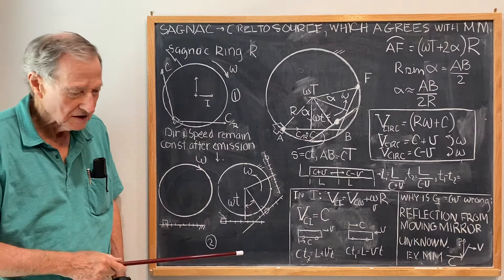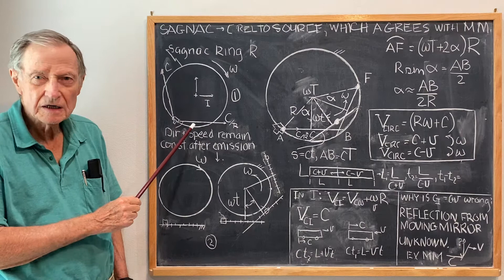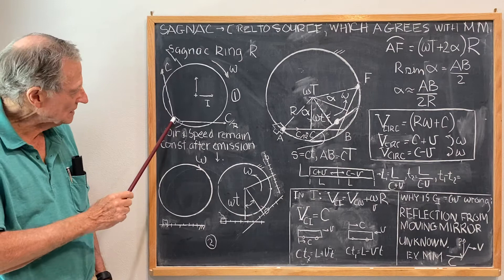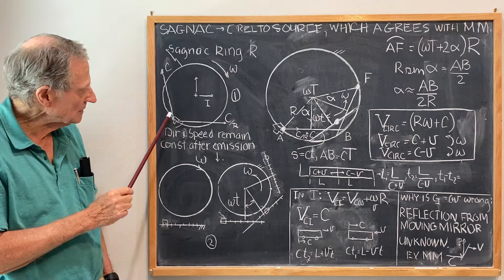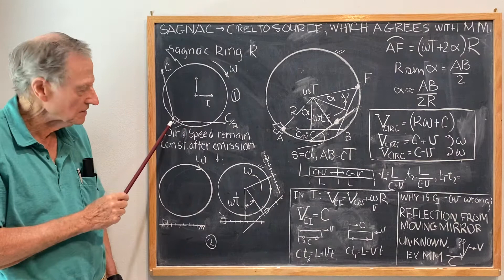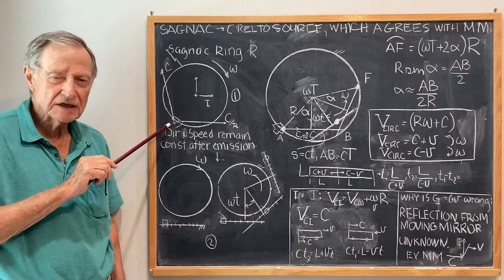The basic Sagnac experiment consists of a fiber optic cable in a circle and at some point a laser emitting correlated photons simultaneously in two directions around the ring. They travel around the ring, they come together again at the source where they're deflected and create an interference pattern.